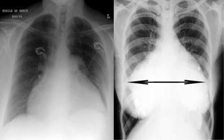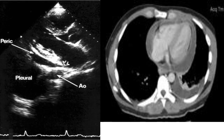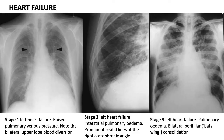This is an example of pericardial effusion — you can see the water bottle configuration, similar to the top part of a water bottle. This is an example of echocardiography showing pericardial effusion, the pleura, and the aorta. And this is a CT scan example of pericardial effusion. It is difficult to appreciate here, but in the practical session they will show you exactly what echocardiography examples look like.